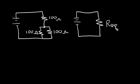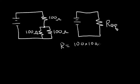Let's do a sample problem involving series and parallel resistors. The circuit on the left has two 100-ohm resistors in parallel, and they're in series with another 100-ohm resistor. We want to find R_eq. First, let's find the equivalent resistance of the parallel combination. The equivalent resistance is the product over the sum: 100 ohms times 100 ohms divided by 200 ohms, which equals 50 ohms.